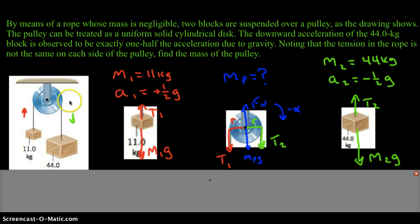So what we're going to do is start the problem as we always would. We'll start with an FBD on each object, labeling what we know. 11 kilograms accelerating at plus one-half g, 44 kilograms accelerating at negative one-half g. That's given in the problem. One-half the acceleration due to gravity is the acceleration. And the goal is to find the mass of this pulley.